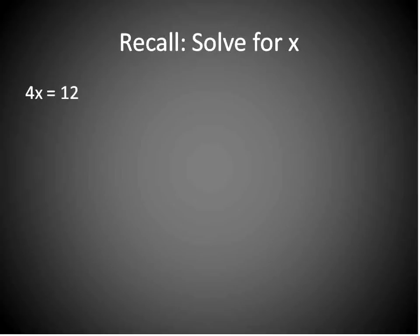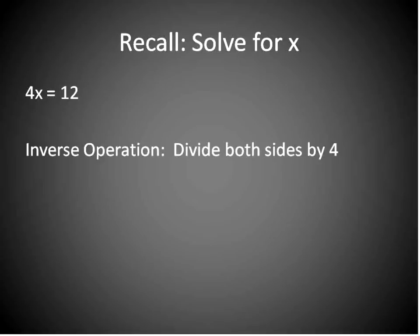Just a quick review. When we solve for one-step transformations like this one, what we do is we need to isolate our variable using what we call the inverse operations. This is 4x = 12, so we do the opposite or the inverse of multiplying, which means that we will divide both sides by 4.